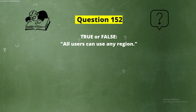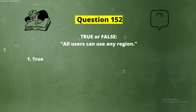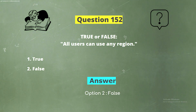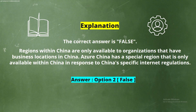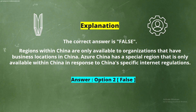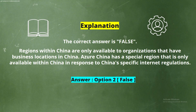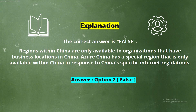Question 152. True or False: All users can use any region. The correct answer is False. Regions within China are only available to organizations that have business locations in China. Azure China has a special region that is only available within China in response to China's specific internet regulations.